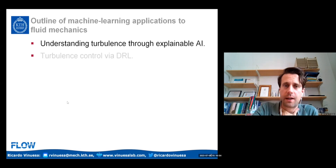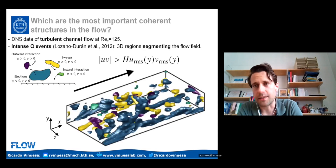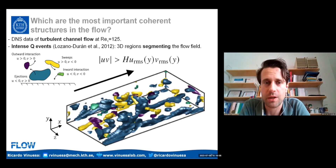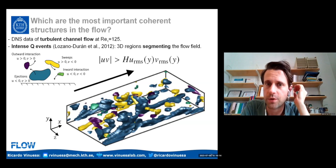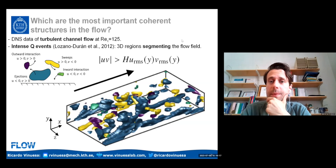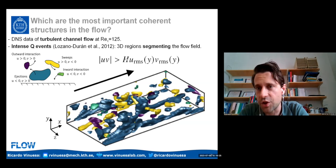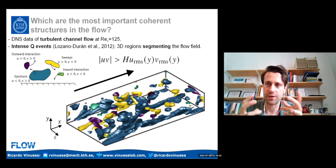Let's start with understanding turbulence through explainable AI. This is a turbulent channel — a low Reynolds number DNS at Reynolds tau 125. We are identifying the so-called Q events, studied by the Jimenez group. These are three-dimensional regions satisfying a condition where the instantaneous Reynolds shear stress is larger than a certain threshold multiplied by the RMS fluctuations in U and V — essentially, three-dimensional regions of intense Reynolds shear stress.